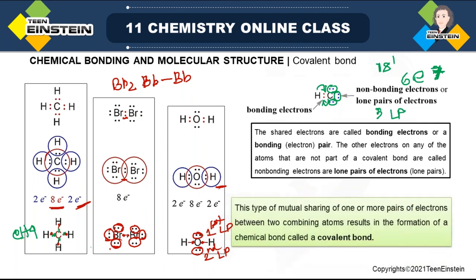This type of mutual sharing of one or more pairs of electrons between two combining atoms leads to the formation of a chemical bond known as a covalent bond. All these examples — Cl₂, HCl, CH₄, Br₂, H₂O — are examples of covalent bonds. It may be sharing of one electron pair (single bond) or more than one (double or triple bond), but whatever it is, the bond formed through mutual sharing is the covalent bond.